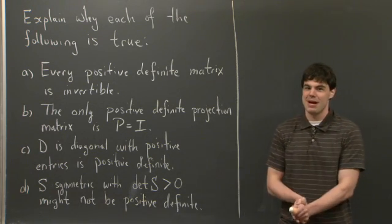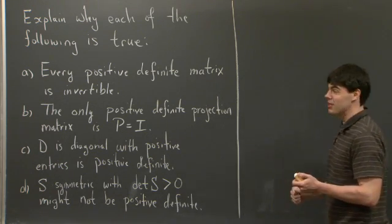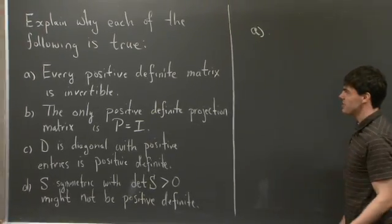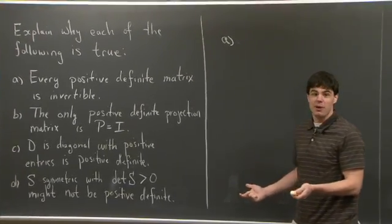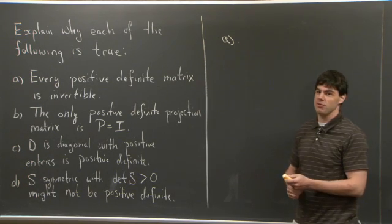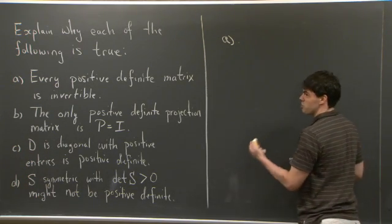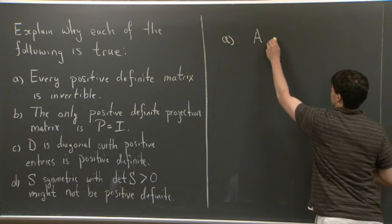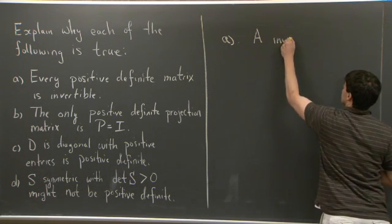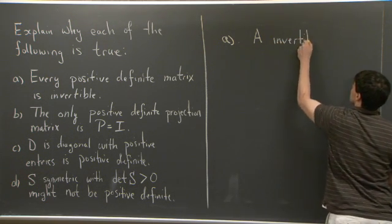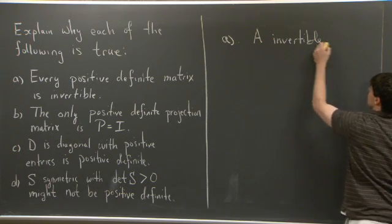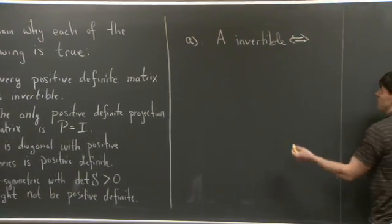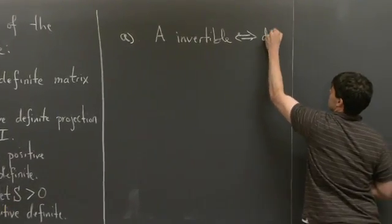Hi everyone, welcome back. Let's take a look at Part A. Part A is asking why every positive definite matrix is invertible. Let's recall that if A is a matrix and A is invertible, then this necessarily implies that the determinant of A is non-zero.